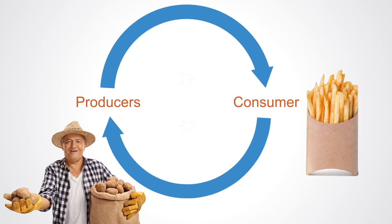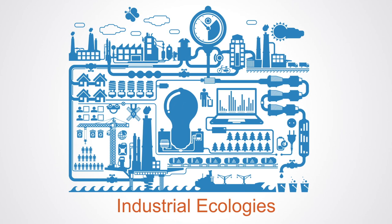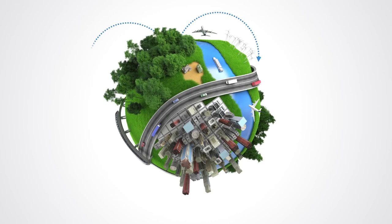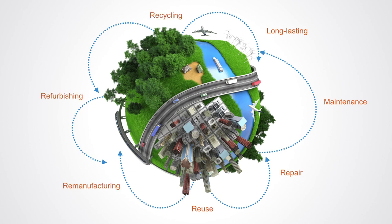Industries are more studied as industrial ecologies so as to identify where and how resources and energy flow through them, where they are lost, and where processes could be interconnected to reduce those losses. In a circular system, resource input and waste emission and energy leakage are minimized by slowing, closing, and narrowing energy and material loops. This can be achieved through long-lasting design, maintenance, repair, reuse, remanufacturing, refurbishing, or recycling.